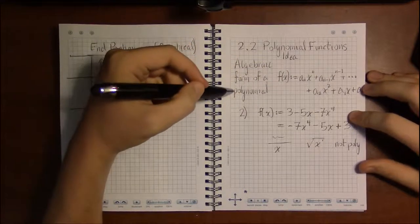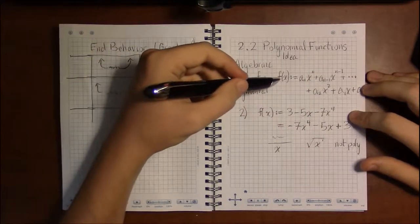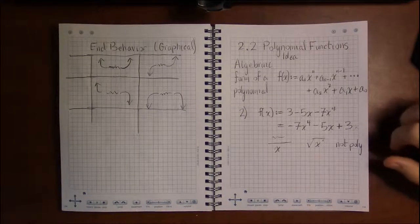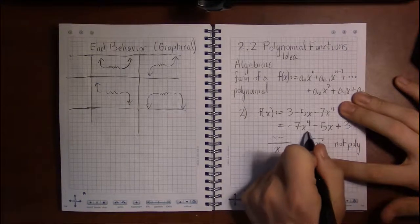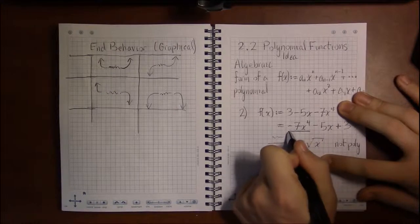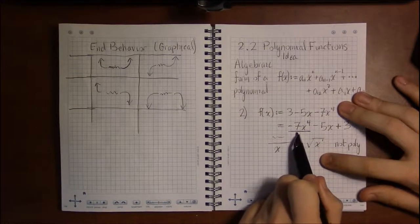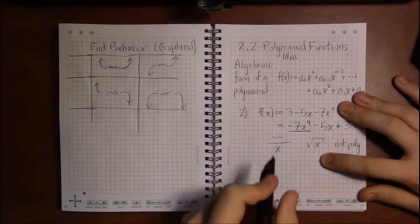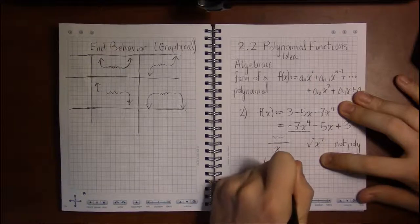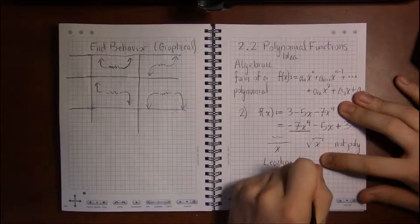We've taken a look at the algebraic form, and in this video I'd like to connect with the graphical shape of a polynomial. To do that, we need to introduce a few more terms. The standard way to write a polynomial is to write the highest power of x first. Well, the term that has the highest power of x is called the leading term. In this instance of question 2, the leading term is -7x⁴, the whole thing.